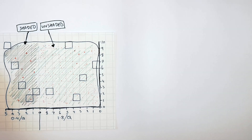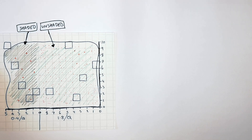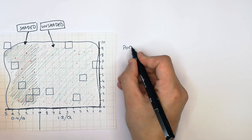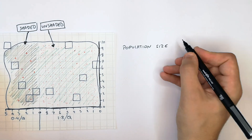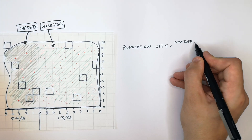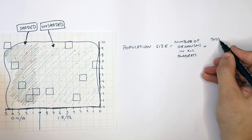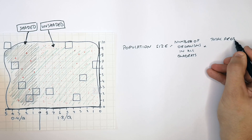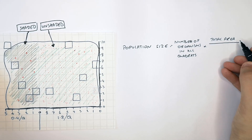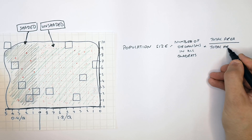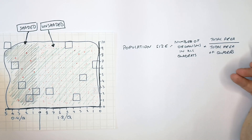We can now estimate the population size for the number of plants in both the shaded and unshaded area using the equation: population size = (number of organisms in all the quadrats × total area) ÷ total area of quadrats.